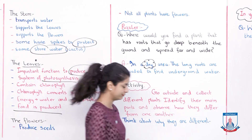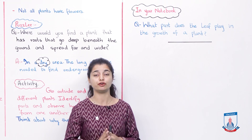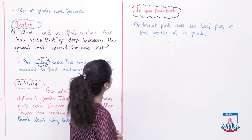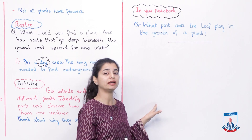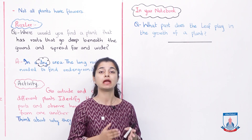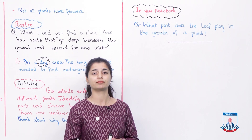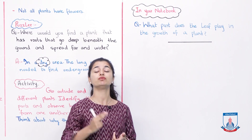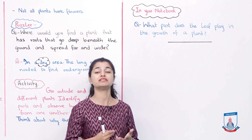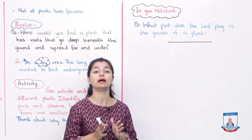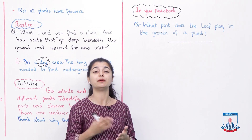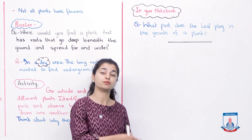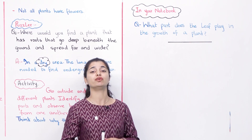Now we have a question. You have to solve it in your notebook. The question is: What part does the leaf play in the growth of a plant? We have talked about this today. The leaf is the place where photosynthesis takes place. Using solar energy, water, and carbon dioxide, the leaf produces food for the plant. Where there is more energy, the plant will survive. If the plant gets food, it will survive; if it doesn't get food, it will die. So leaves are very important — they provide food and allow the plant to grow. Write this answer in your own words.